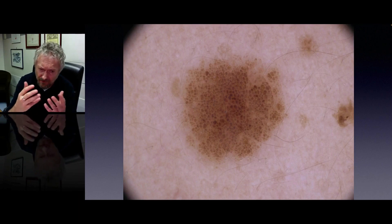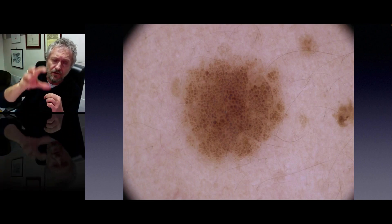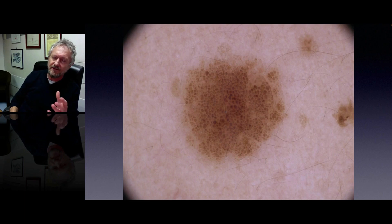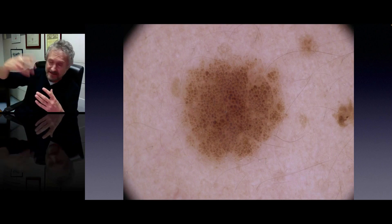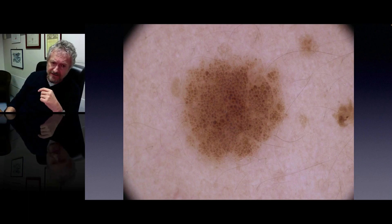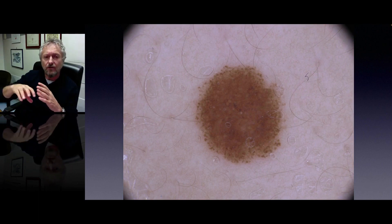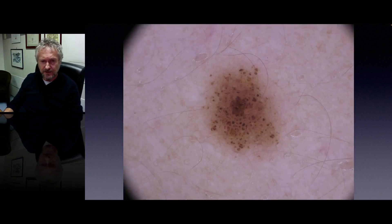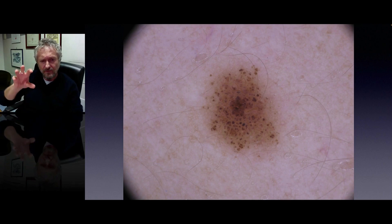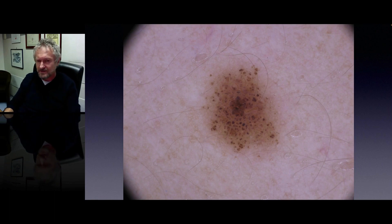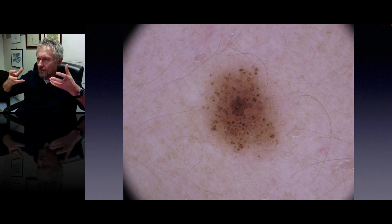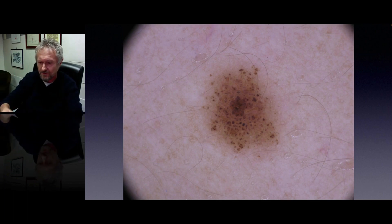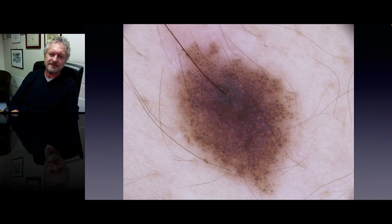The second most common type of nevus is globular nevus — a nevus that instead of showing a network shows regularly distributed globular structures, brownish or grayish. This is the so-called congenital type nevus; usually this kind of nevi are mostly seen in children and then they tend to persist throughout lifetime, becoming dermal — intradermal nevi. Here is another globular nevus with a very regular overall architecture, with globules specifically seen at the periphery. The globules are more brownish at the periphery and become more grayish in the center, which is very common for a compound nevus: brown color means junctional, while grayish globules in the center mean globules that are maturing and going into the dermis.